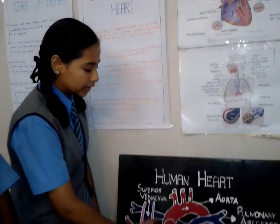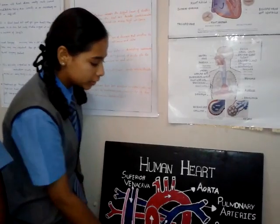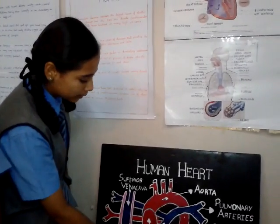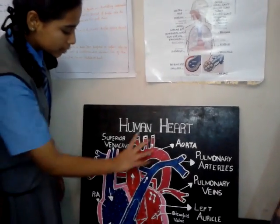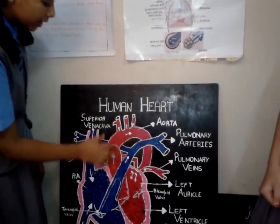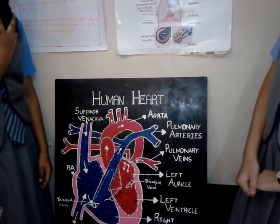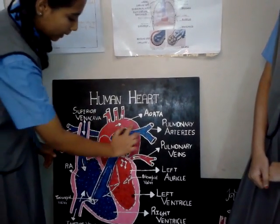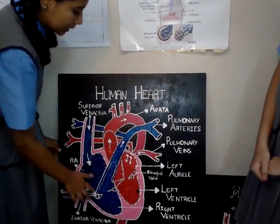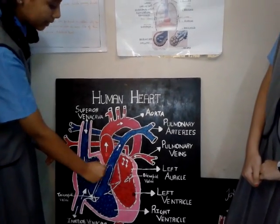Structure of the heart. The circulatory system of man includes blood, blood vessels, and heart. Heart is a muscular sac situated between the lungs, slightly towards the left side of the body. It is protected by the ribcage. The size of the heart is the size of one's fist.